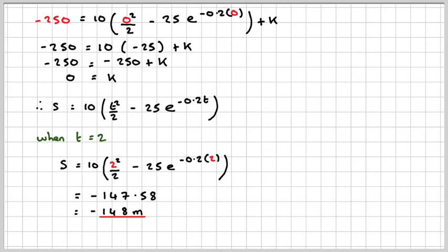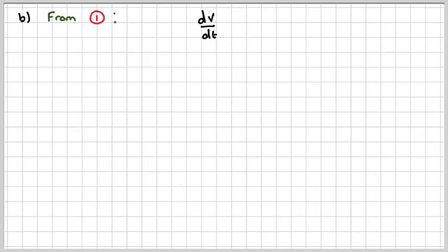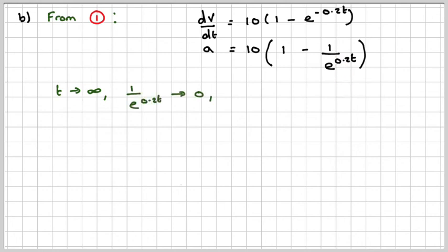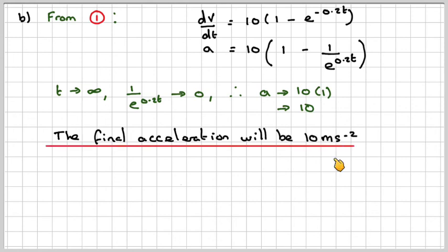And then you're asked, what's the final acceleration of the particle? Well from equation 1, the acceleration, which is dv by dt, is 10 times 1 minus e to the minus 0.2t. We write that as a is equal to 10 times 1 minus 1 over e to the 0.2t. So that when t is infinity, this bit here will approach 0, because you're going to have 1 over a very large number. So it approaches 0. So that means that a will approach 10 times 1, because you're going to be left with this bit. This bit here will be 0. Therefore the final acceleration will be equal to 10 meters per second squared.